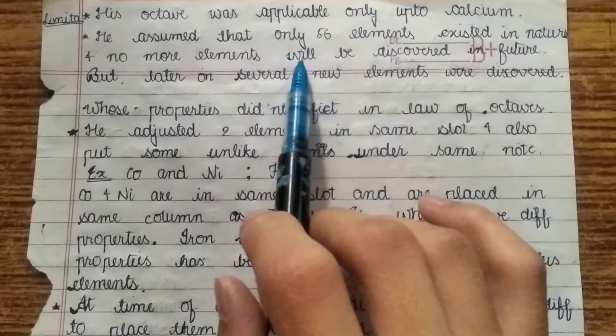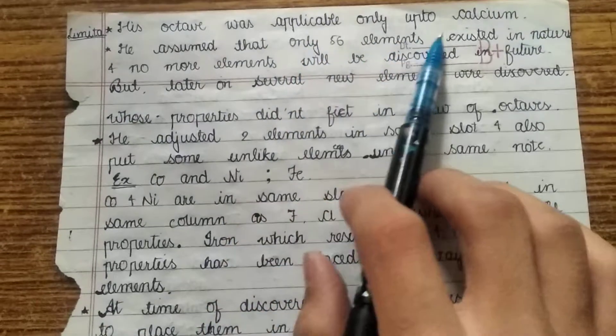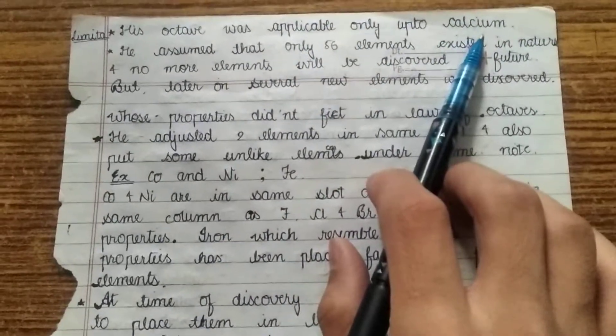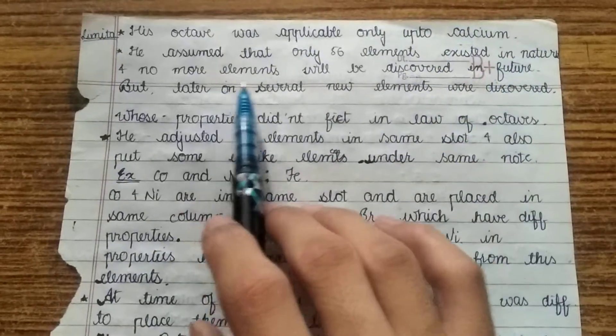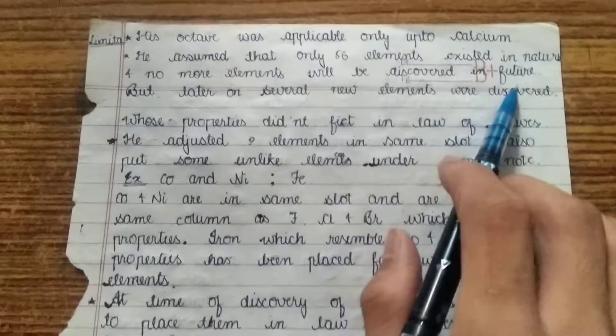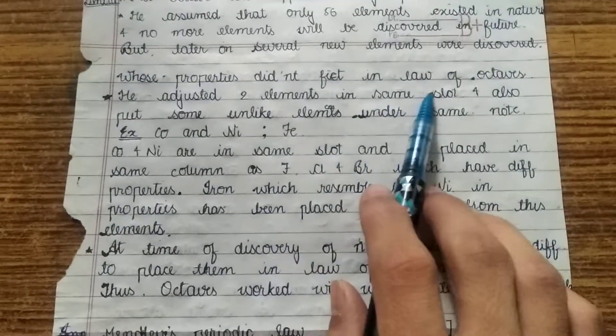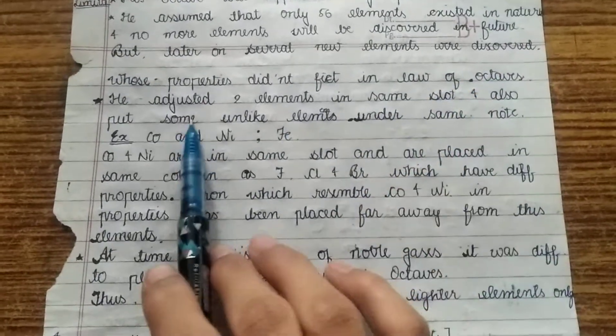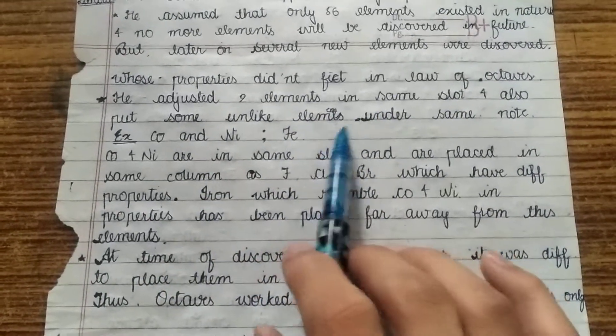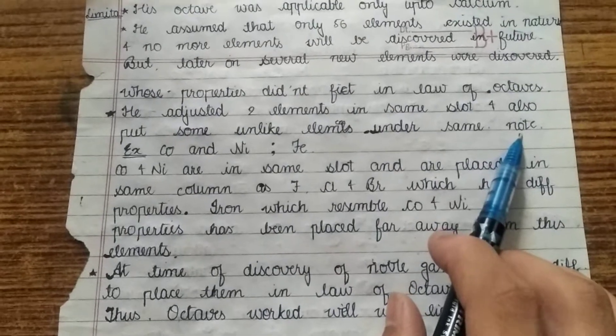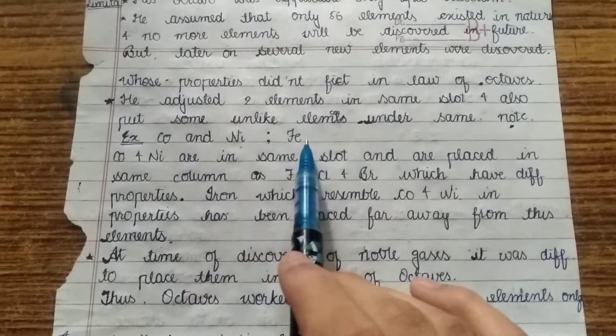Now we will see the limitations of Newland law of octaves. First is his octave was applicable only up to calcium, means 40 mass. He assumed that only 56 elements will exist in nature and no more element will be discovered. But in future there are many elements that were discovered whose properties cannot fit in the law of octaves. He also adjusted two elements in the same slot and put unlike elements under the same note.